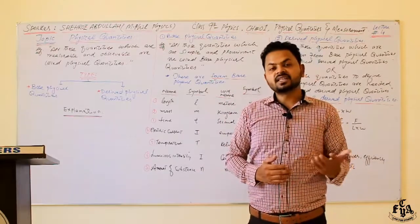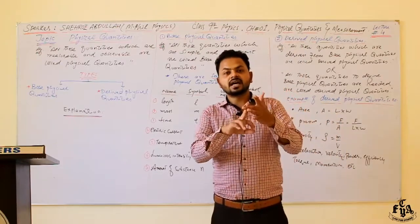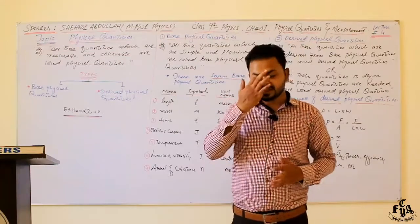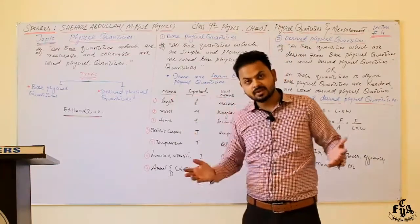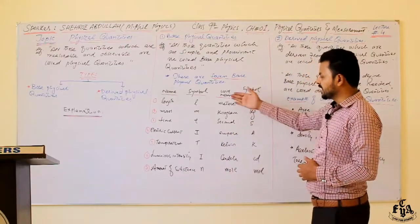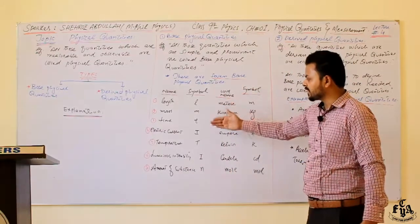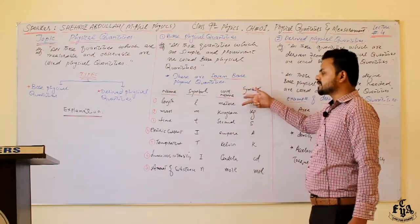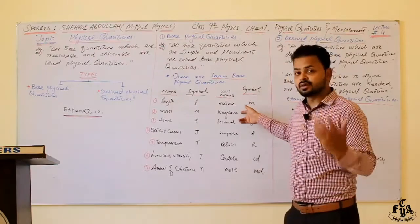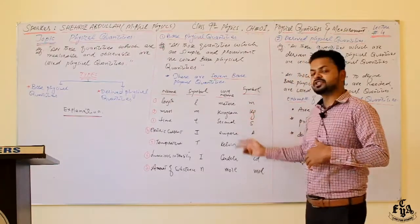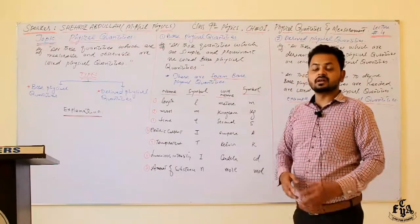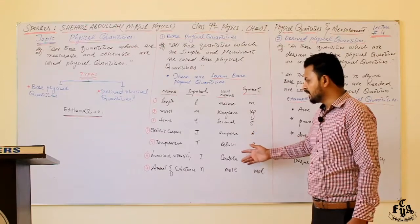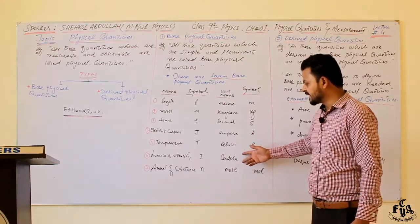There are seven base physical quantities: length, mass, time, electric current, temperature, luminous intensity, and amount of substance. Length is measured in meters, mass in kilograms, time in seconds, electric current in amperes, temperature in Kelvin, luminous intensity in candela, and amount of substance in moles.